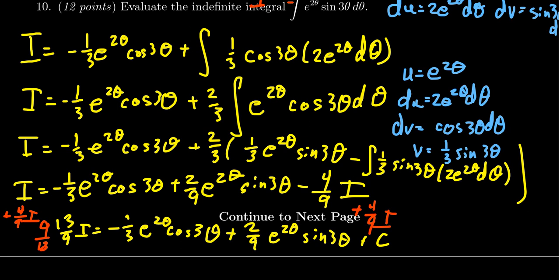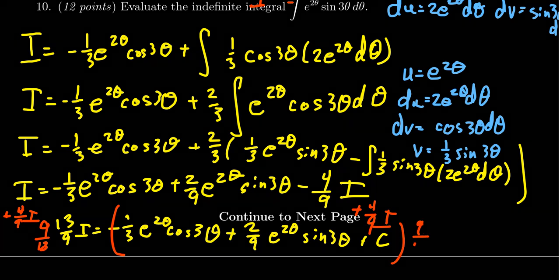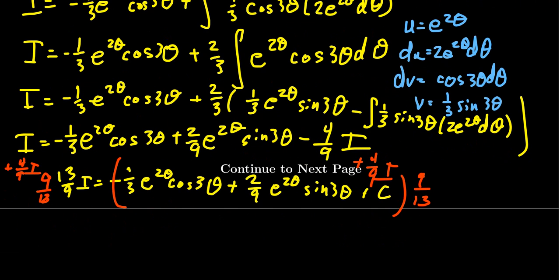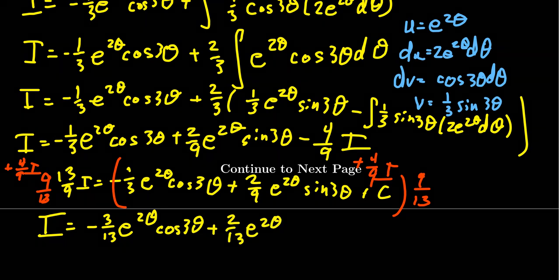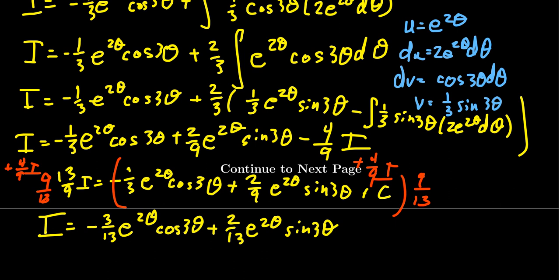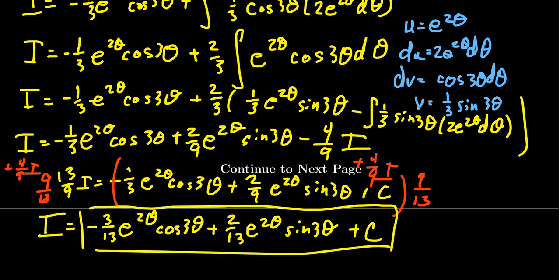We multiply both sides by the reciprocal, nine thirteenths. The ninths cancel on the right-hand side, giving us the final answer: I equals negative three thirteenths e to the two theta cosine of three theta, plus two thirteenths e to the two theta sine of three theta, plus C. Multiplying an arbitrary constant by a specific constant still gives an arbitrary constant, so we just write plus C. That is the anti-derivative we're looking for, accomplished using integration by cycles.